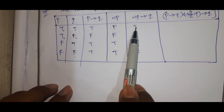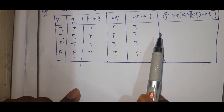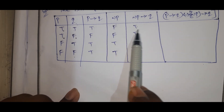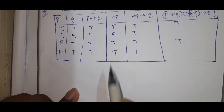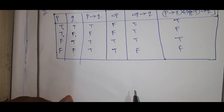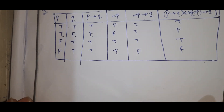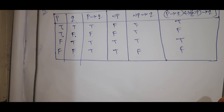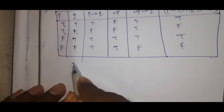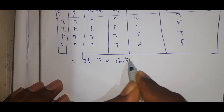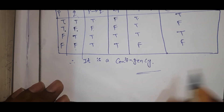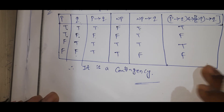For the biconditional: any two statements both true gives true, and any two statements both false also gives true. The biconditional column has a mix of true and false values, making this a contingency.